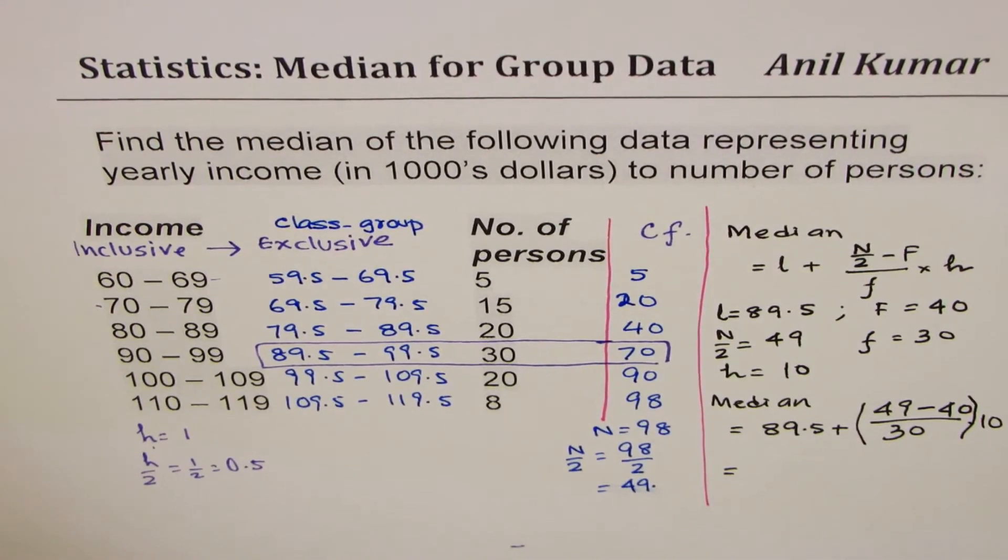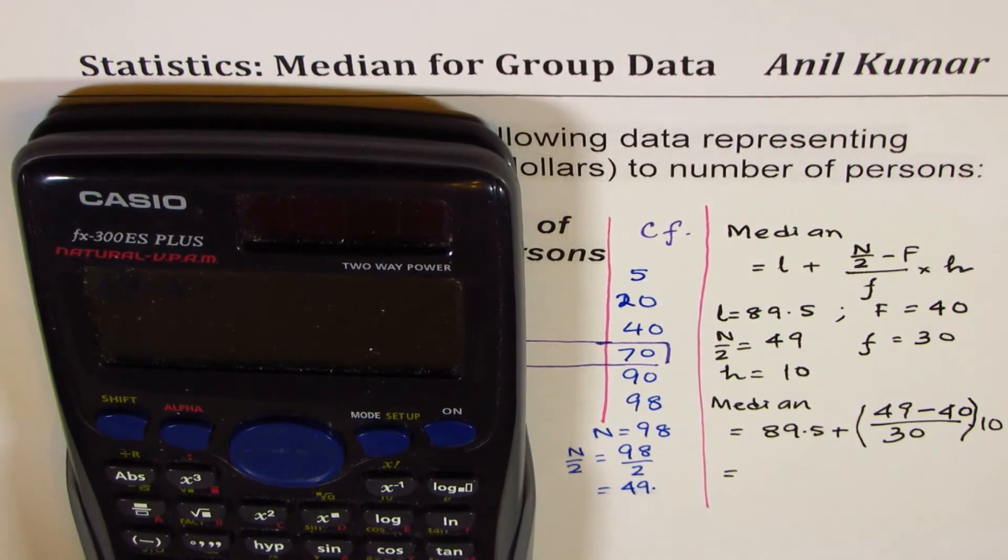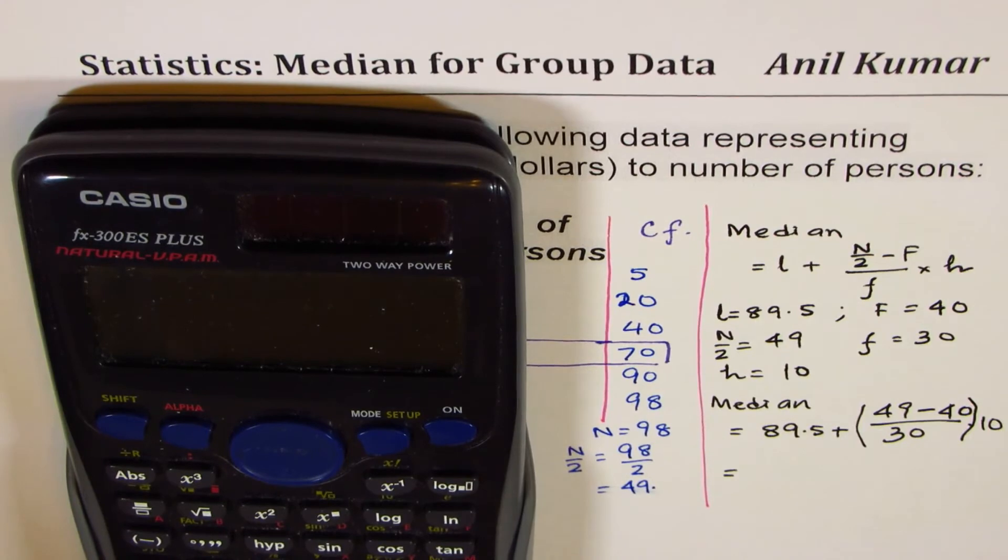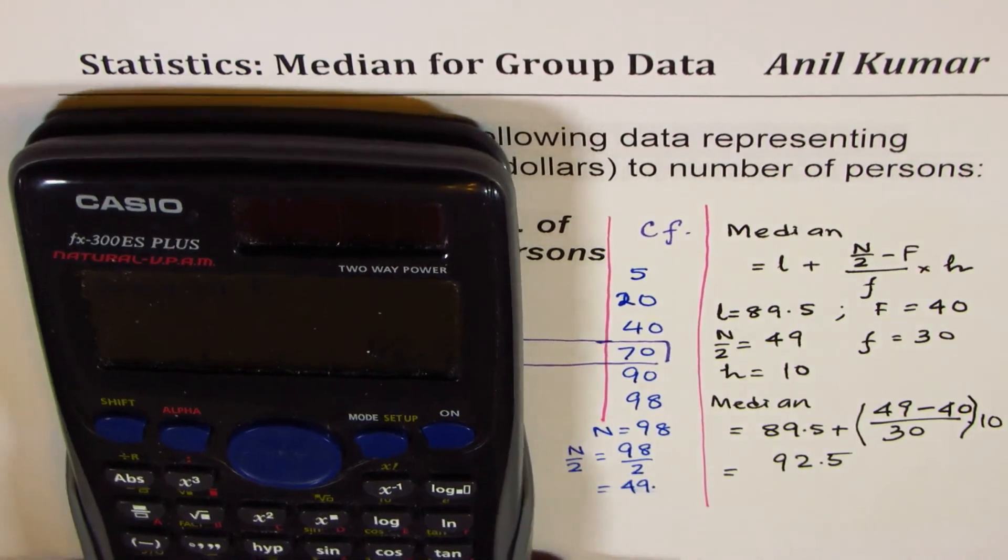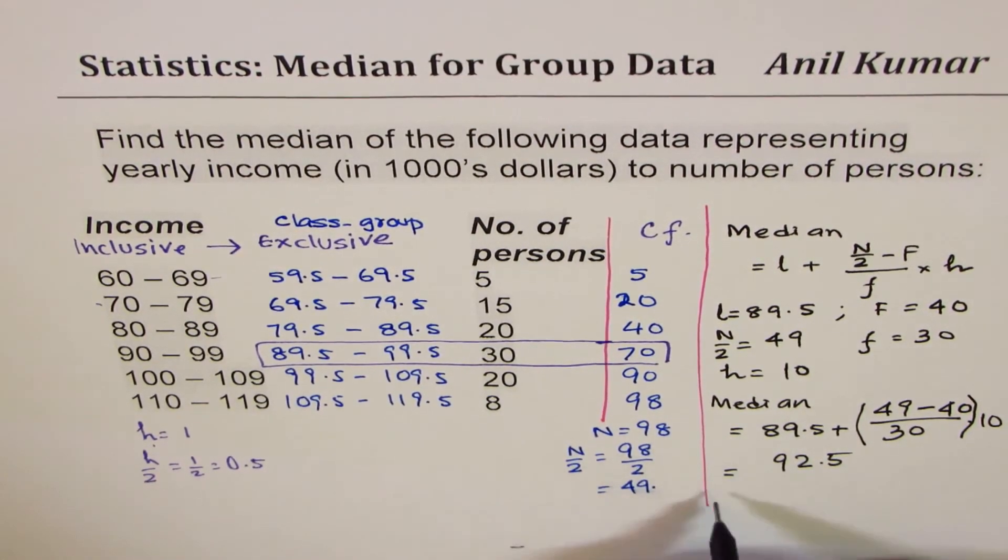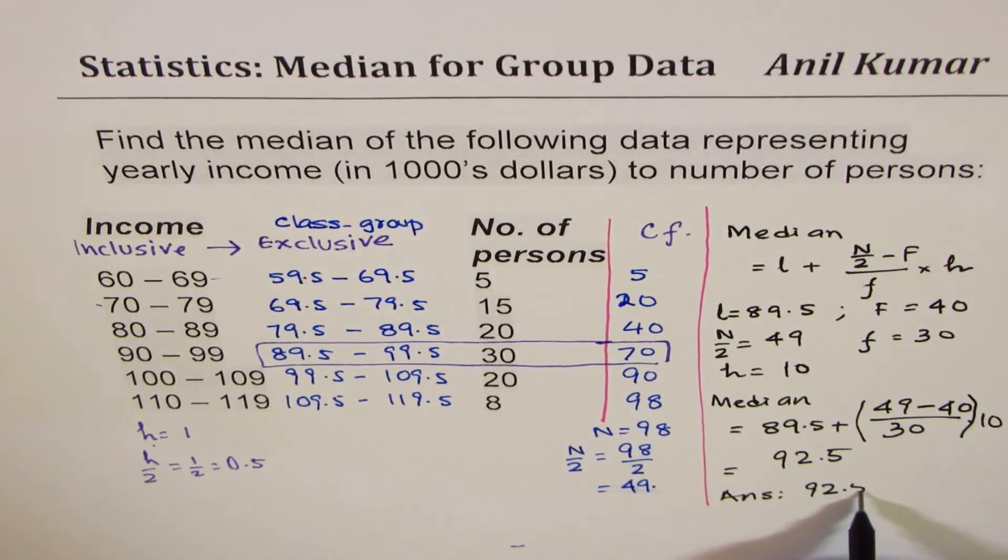Let's use the calculator to calculate this. 49 minus 40, which is 9 divided by 30 times 10 and add 89.5 to get the answer in decimals as 92.5. So 92.5 is our median, and we get our answer as 92.5.